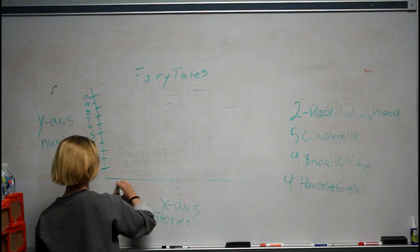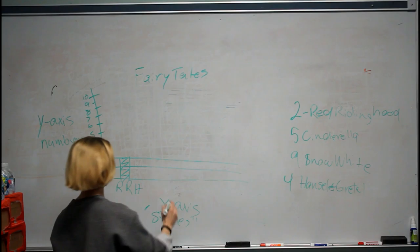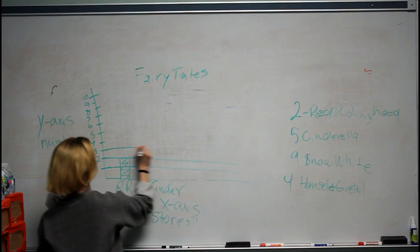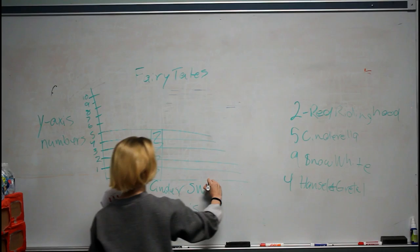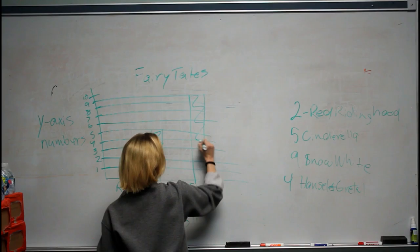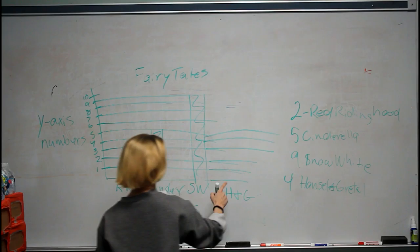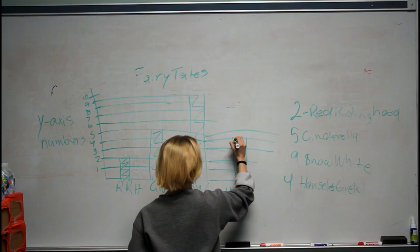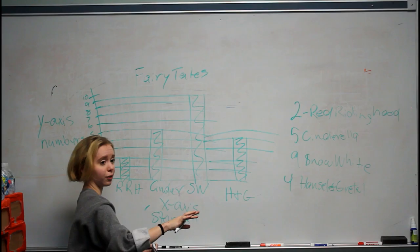Our first bar is Red Riding Hood at 2 — all the way across, put our first bar at 2, and color it in. Next is Cinderella at 5 — draw two lines up, color it in. Then Snow White at 9 — draw our two lines up, color it in. Our last one is Hansel and Gretel at 4 — count to 4, all the way over, make our bar. So all bars are graphed corresponding to the data table. That's the third and final graph I'm going to show you.